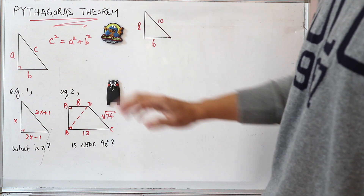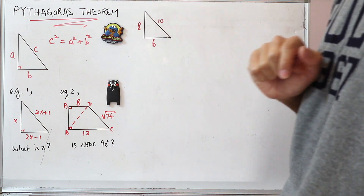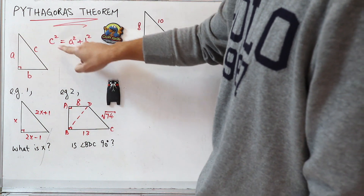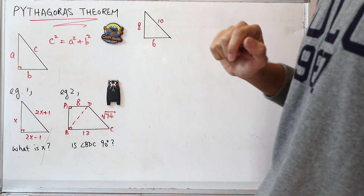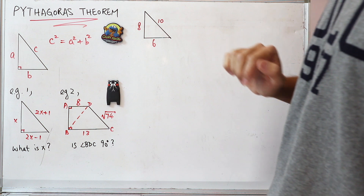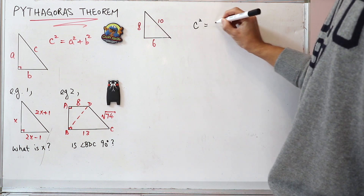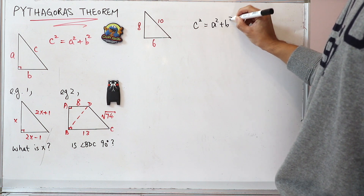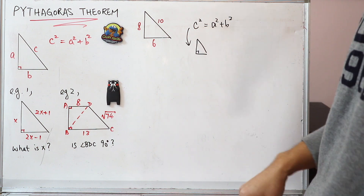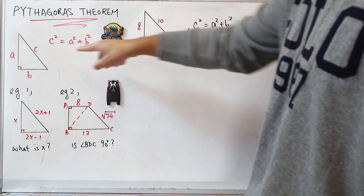Let's work on example number 2. But before I jump into example number 2, I need to tell you something more about Pythagoras theorem. In the beginning of this video, I told you that for a right-angle triangle, c squared equals a squared plus b squared. But this is only one part of Pythagoras theorem. There's a second part: if you can prove that c squared equals a squared plus b squared, then you know that the triangle is a right-angle triangle. This is what we call the converse.